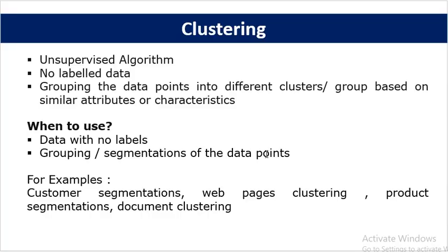The next concept is clustering. There is often confusion between classification and clustering — classification is supervised learning, while clustering is unsupervised learning. In clustering there is no labeled data; you directly provide the dataset and the algorithm itself finds patterns, grouping data points that have similar attributes or characteristics into one cluster. Clustering is used whenever there are no labels and you want to find patterns inside the data, or when you want to group data without requiring any training.